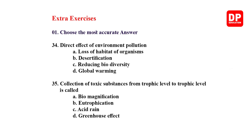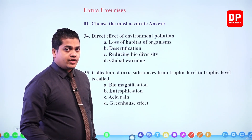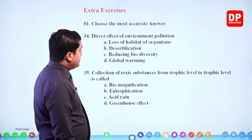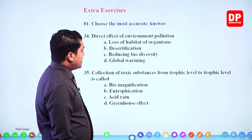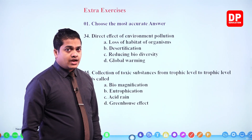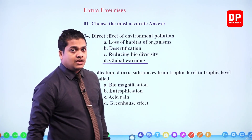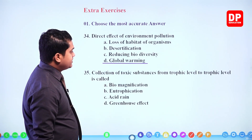Next: direct effect of environment pollution — loss of habitat of organisms, desertification, reducing biodiversity, or global warming. Loss of habitat is correct but indirect. Desertification is also correct but indirect. Reducing biodiversity is correct but also indirect. Global warming is a severe condition created directly because of environmental pollution. So the answer is global warming — it is a direct effect of environmental pollution.